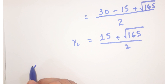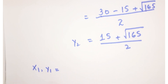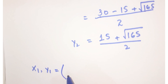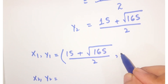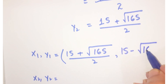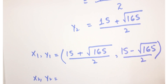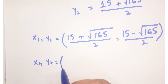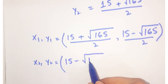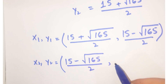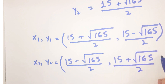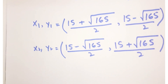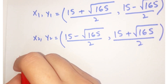So the solution pairs are: x₁ = (15 + √165)/2 and y₁ = (15 − √165)/2; and x₂ = (15 − √165)/2 and y₂ = (15 + √165)/2. Now let's verify whether our solution is correct.